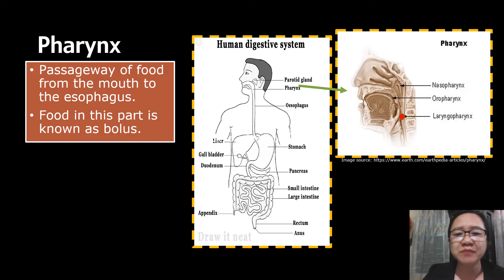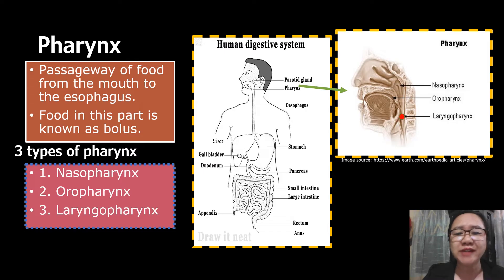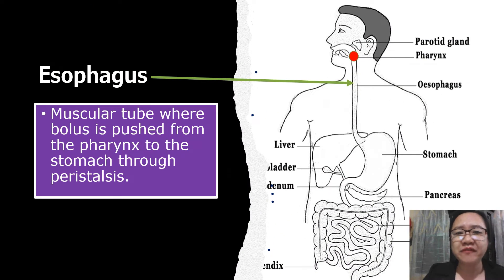Food in the pharynx is known as bolus. There are three types of pharynx: the nasopharynx, the oropharynx, and the laryngopharynx. From the pharynx, the food moves down to the esophagus. The esophagus is a muscular tube where bolus is pushed from the pharynx to the stomach through peristalsis.